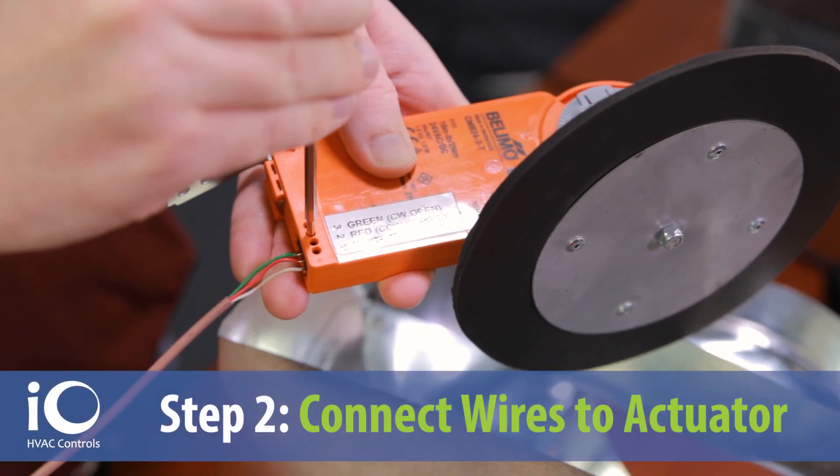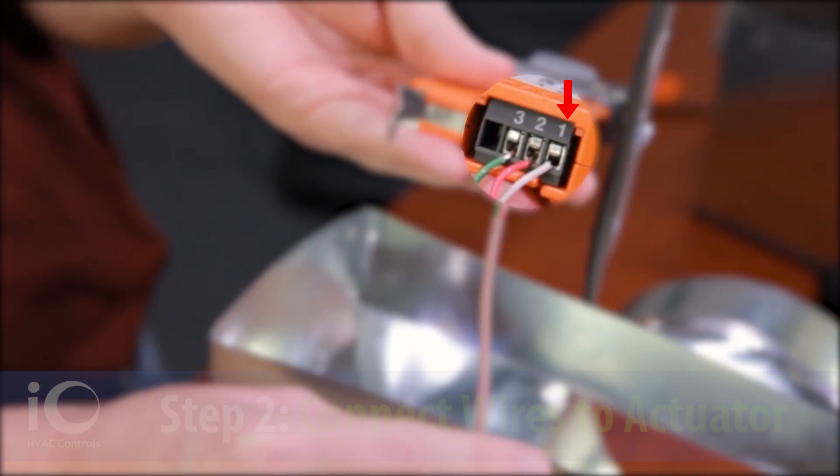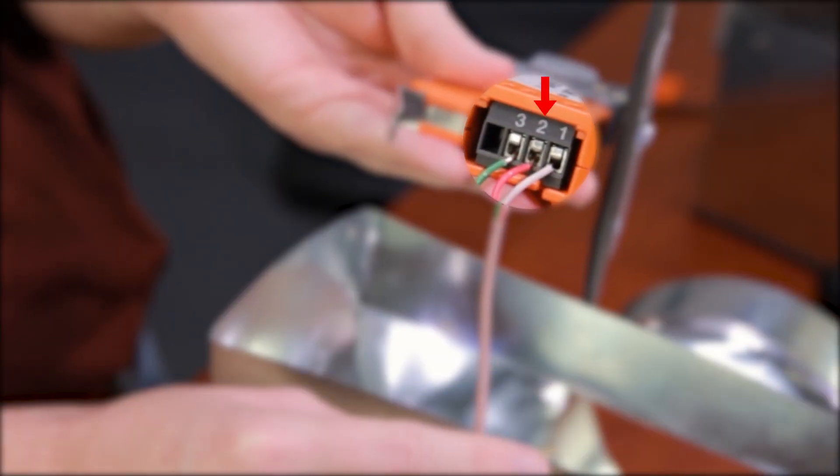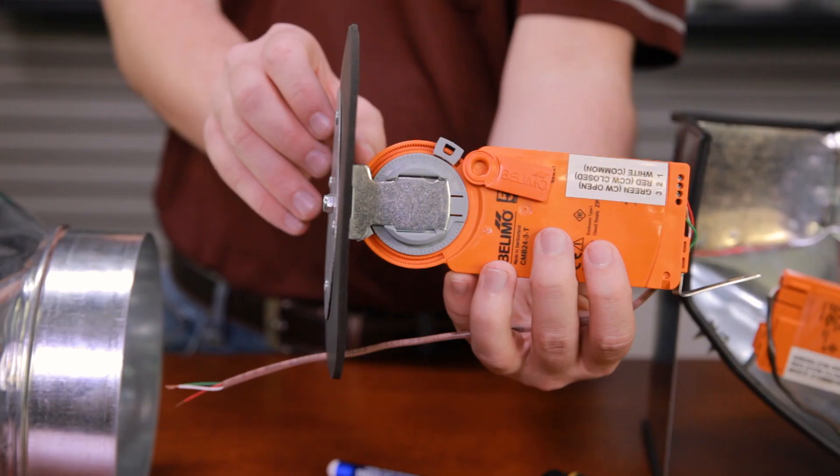Step 2. Connect the thermostat wire to the actuator as follows. One corresponds with common. Two corresponds with power close. Three corresponds with power open.